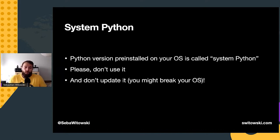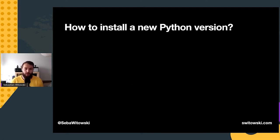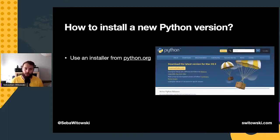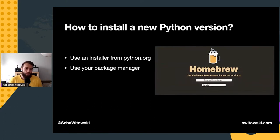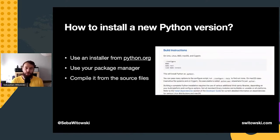My advice is to leave the system Python alone and pretend that it doesn't exist. No matter what operating system you have, you will have to install Python separately, and there are many different ways to do this. You can go to the python.org website and download the installer, you can use a package manager like Homebrew on macOS or apt-get on Linux, and you can even compile Python from the source files.